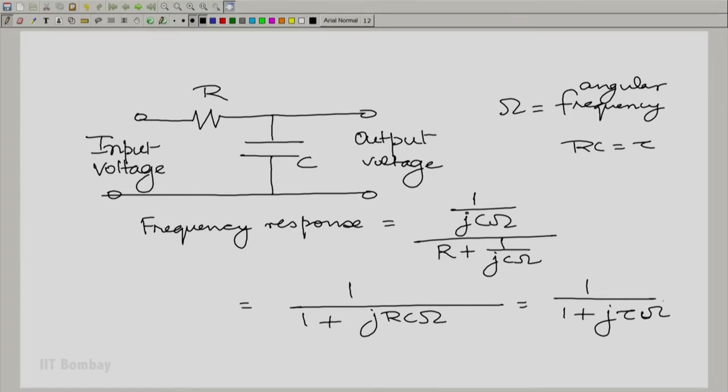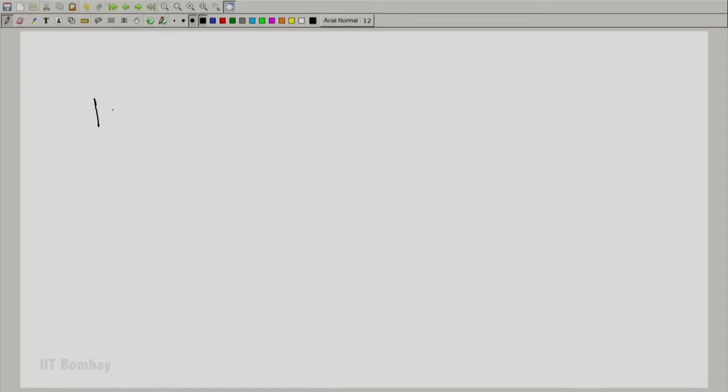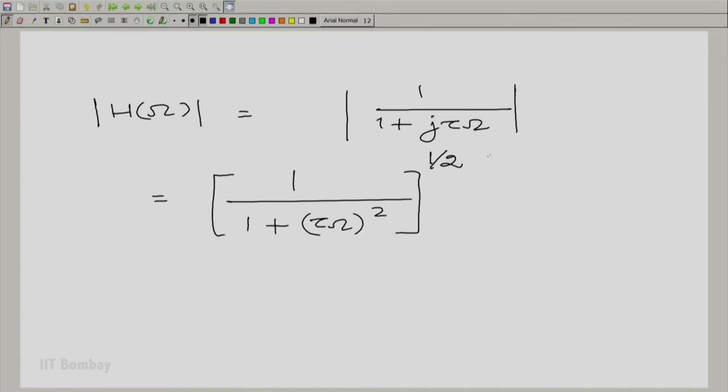Let us call it H omega. This is a function of capital omega. And let us find out the magnitude of H omega. It is of course the magnitude of 1 by 1 plus j tau omega, which is 1 by square root of 1 plus tau omega squared. And we can sketch this, the so-called magnitude response.